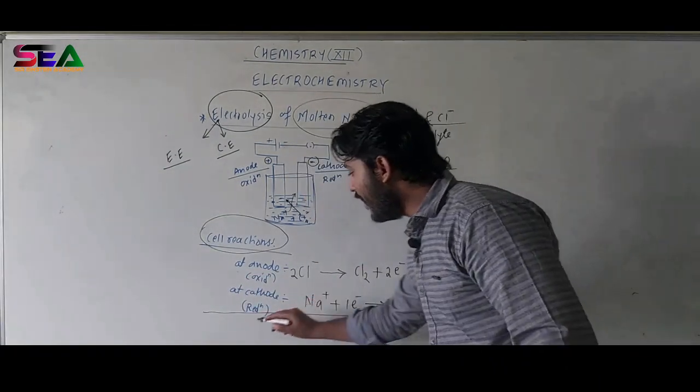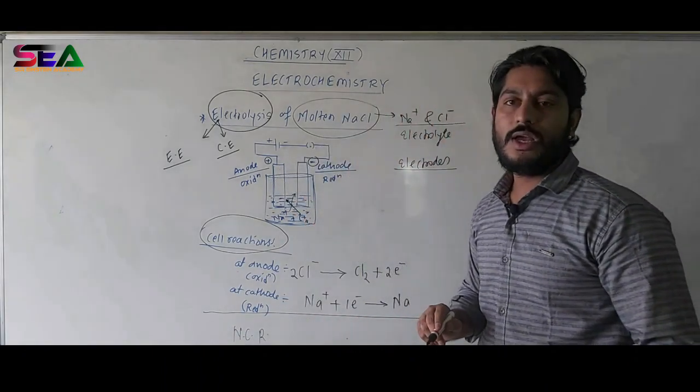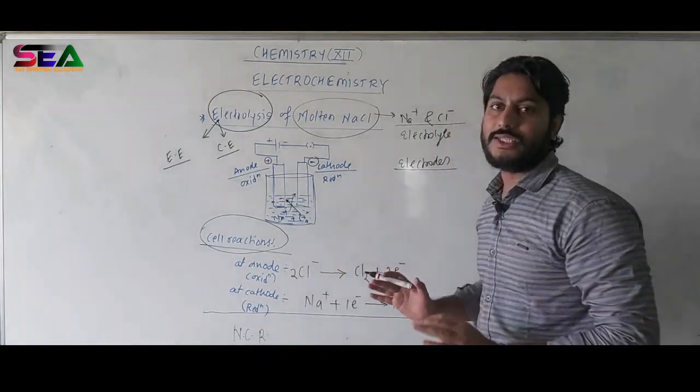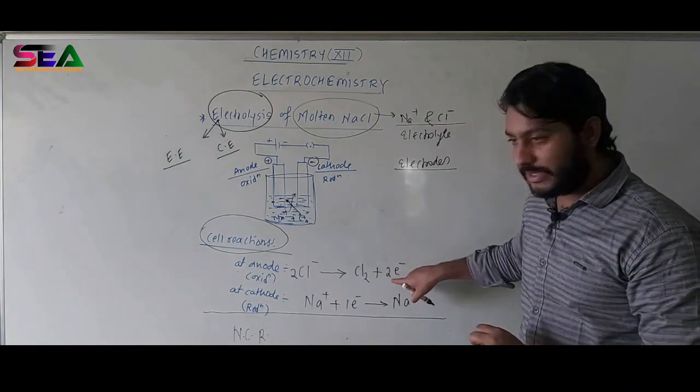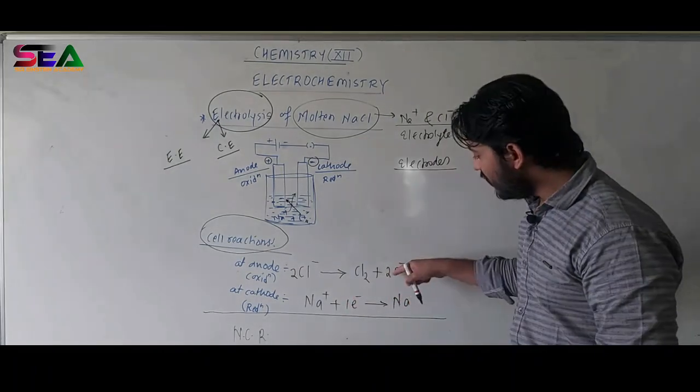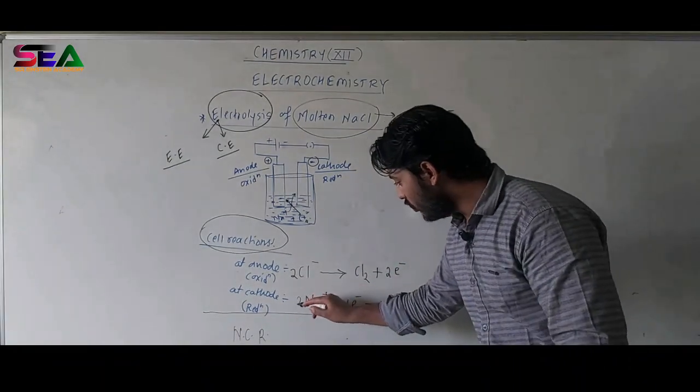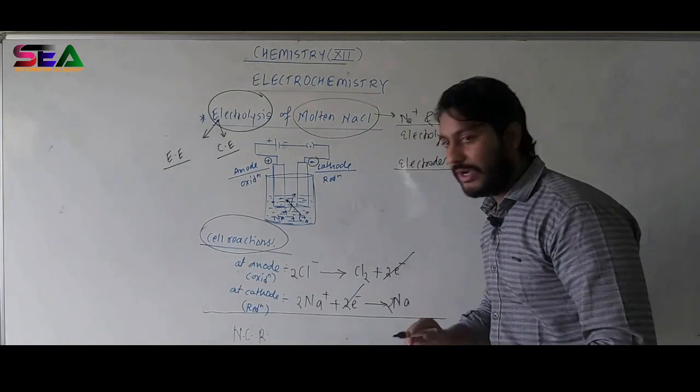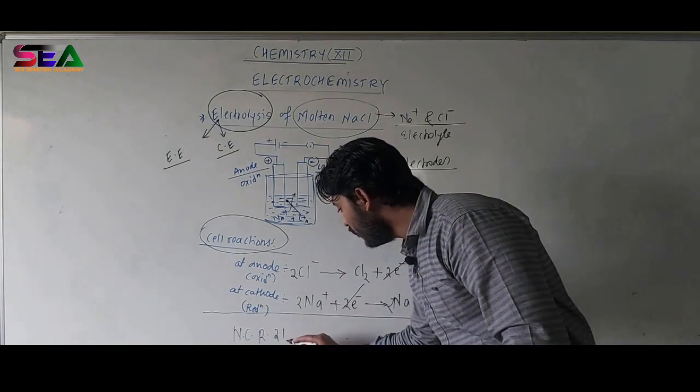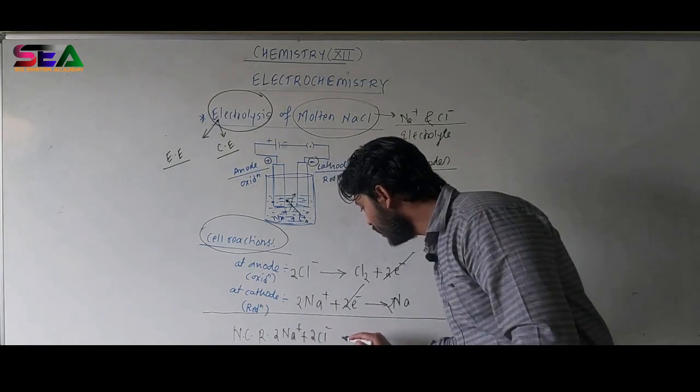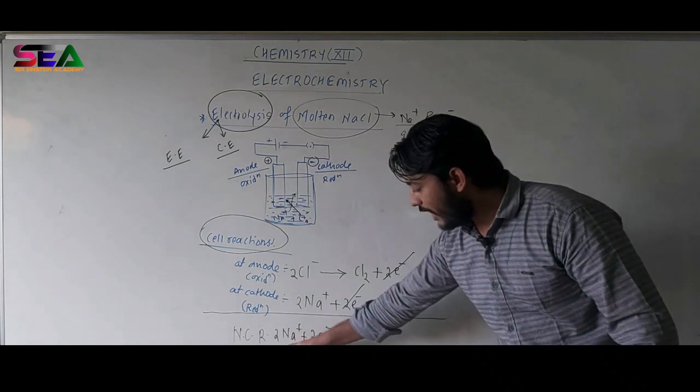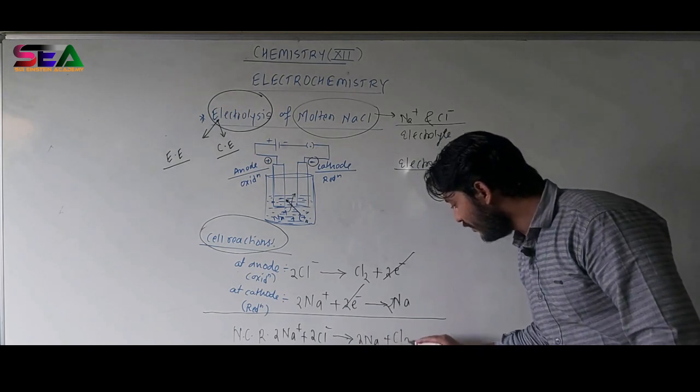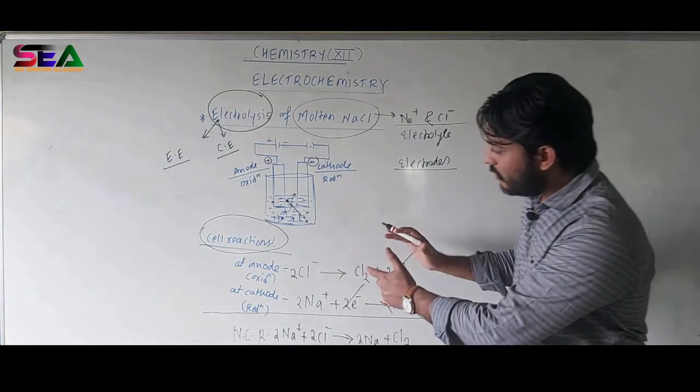So, now, if I want to write the combined reaction which is known as net cell reaction, what I will do? I will just add both the reactions. I will cancel the common factors that is free electrons and then I will write the overall reaction. But, you can simply see here, there we find two electrons and we find one electron. So, as to make this number of free electrons equal, I will multiply second reaction by 2. So, I will put 2 over here. This will become 2. This will become 2. Now, these free electrons on opposite side will cancel with each other and it will give me 2 Na+ plus 2 Cl-. So, here, 2 Na+ ions combined with 2 Cl- ions, it will give me 2 Na metal that is atom and it will give me liberation of Cl2. So, this is what all about cell reaction.